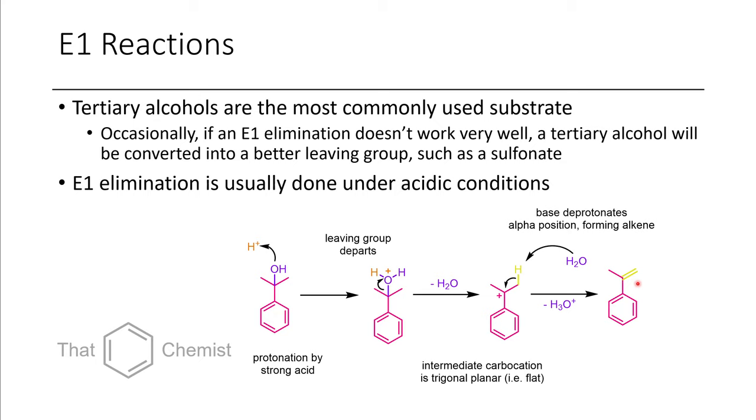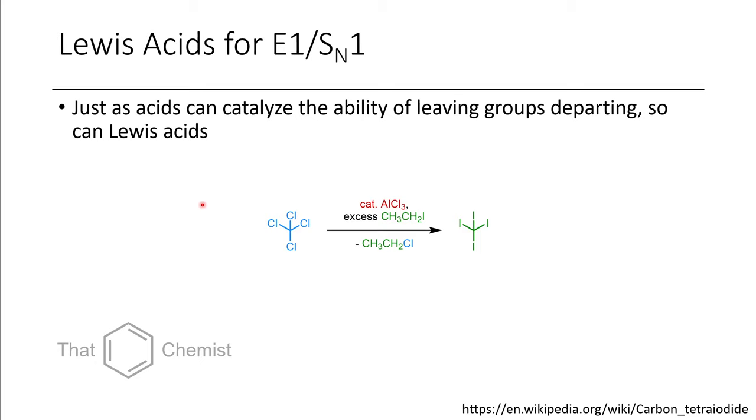Now, just like you can use acids to catalyze these reactions, you can also use Lewis acids. So aluminum chloride is an example of one Lewis acid that you see for activation of alkyl halides, for instance.